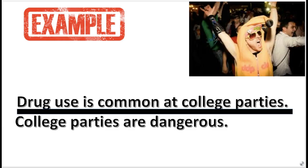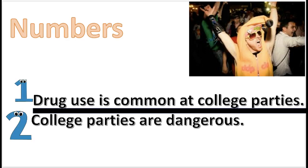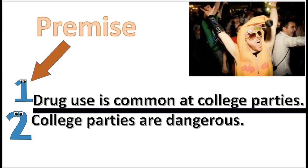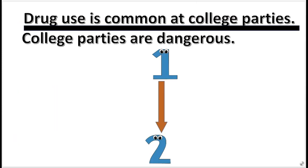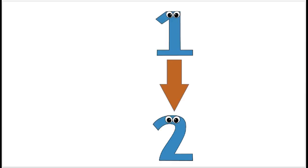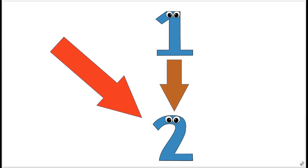Here is an example. To help draw a diagram, we will insert numbers before each statement. In this argument, statement 1 is the premise and statement 2 is the conclusion. We diagram the argument like this. This diagram asserts that statement 1 implies statement 2.